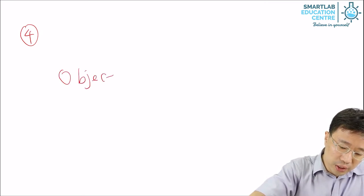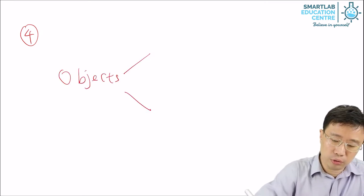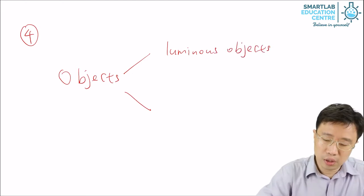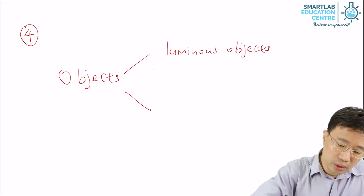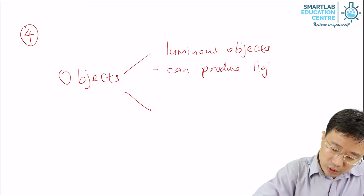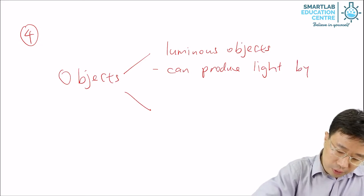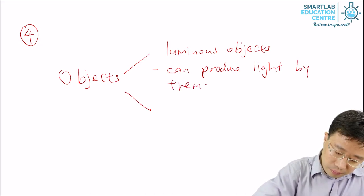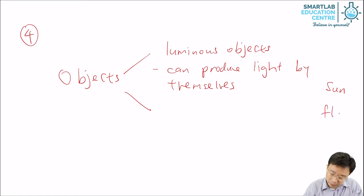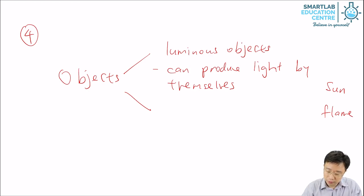Objects, basically, we can classify them in two types. One: luminous objects. These can produce light by themselves. Examples: the sun, a flame, and for things that are alive, a firefly.